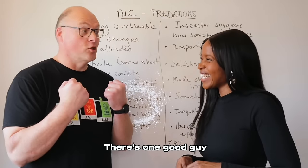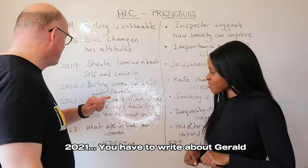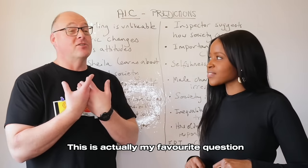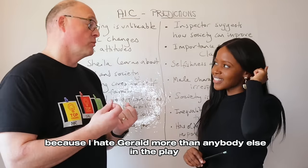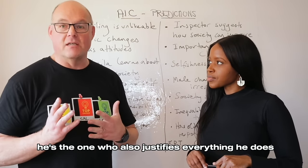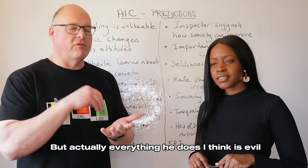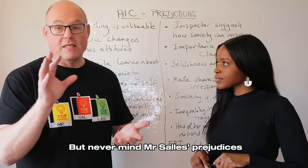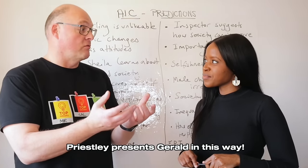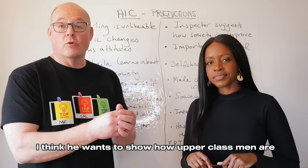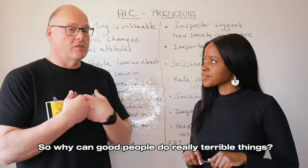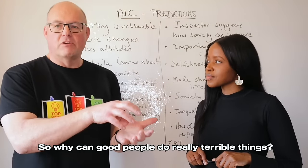In 2021 the character question was about Gerald and ideas about responsibility. This is described as a favorite question because Gerald is arguably the most corrupt character in the play — he justifies everything he does and thinks he's great, when actually everything he does is deeply problematic. To get top grades, you write about why Priestley presents Gerald this way: he wants to show how upper-class men can be effectively evil even when they don't see themselves as evil.